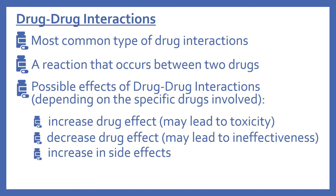We'll look now at the specific types of drug interactions, beginning with drug-drug interactions. This is the most common type of drug interaction — basically a reaction that occurs between two drugs. Possible effects, depending on the specific drugs involved, include an increase in drug effect, which can lead to toxicity, or a decrease in drug effect, which may lead to ineffectiveness or an increase in side effects.